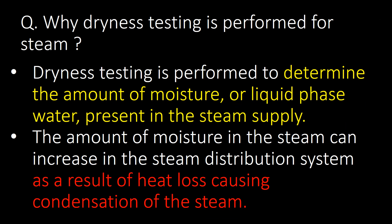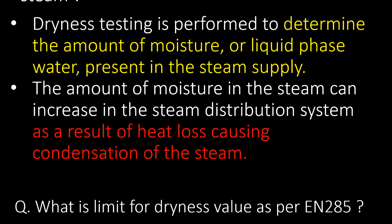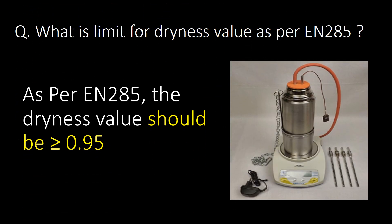Why is dryness testing performed for steam? Dryness testing is performed to determine the amount of moisture or liquid-phase water present in the steam supply. Moisture in steam can increase through the steam distribution system as a result of heat loss causing condensation. As per EN 285, the dryness value should be greater than or equal to 0.95.